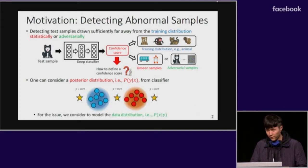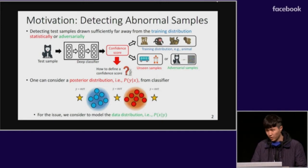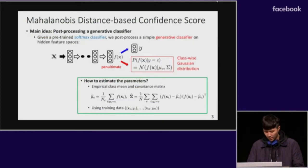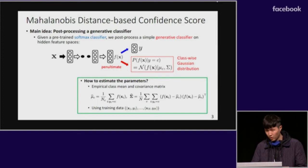However, it is well known that the posterior distribution can be easily overconfident even for abnormal samples. To tackle this fundamental limitation, we consider modeling the data distribution P(X|Y) in this paper, because P(X|Y) is a more direct metric to measure the confidence of an input X. To this end, instead of utilizing an expensive density estimator, we simply post-process a generative classifier on the hidden feature space of a pre-trained softmax classifier.